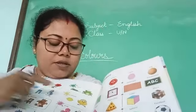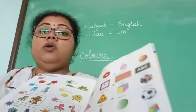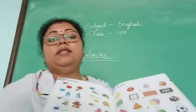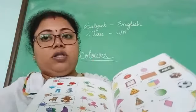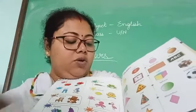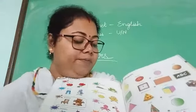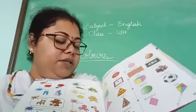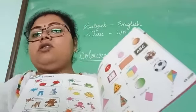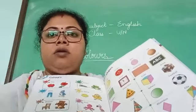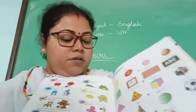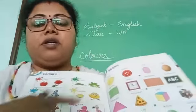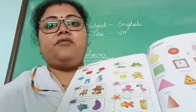Next, this is yellow. Y-E-L-L-O-W — yellow. Yellow color — it is given lemon and one bird. That bird is of yellow color. Lemon is yellow color, and this bird is also of yellow color.